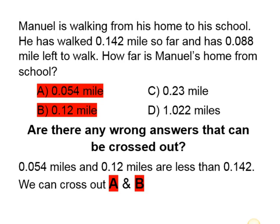And just like that, we've increased our chances of getting this problem right. Whenever you're looking at a problem, once you figure out what you're looking for and the steps to solve it, look to see if there are any answer choices you can cross out, because crossing out wrong answers immediately helps increase your chance of getting the problem correct.